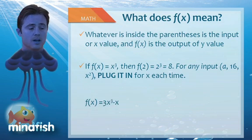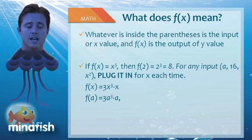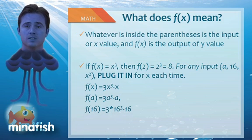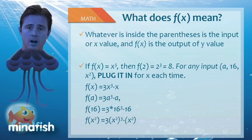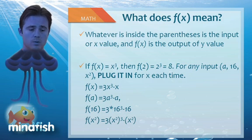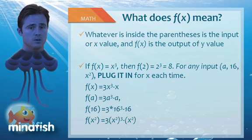Let's take a look at another example: f of x equals 3x cubed minus x. If we want to do f of a, we simply take out the x's and put in a's, yielding 3a cubed minus a. If we're doing it with a number, it's basically the same thing — f of 16 is going to be 3 times 16 cubed minus 16. Likewise, for f of x squared, you take out the x and put in x squared. Make sure you have parentheses around whatever you plug in so that you square or cube the entire thing, not just part of it.